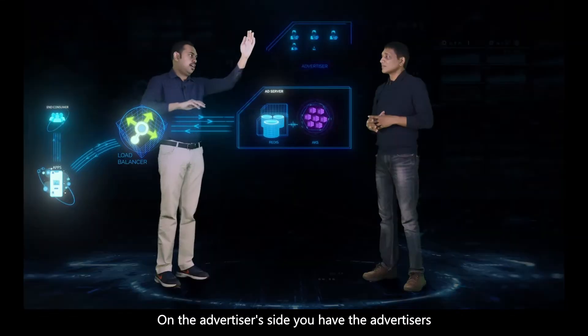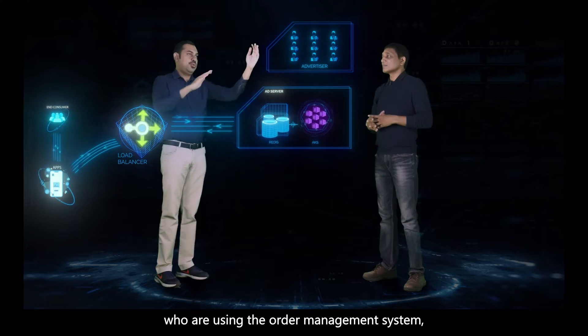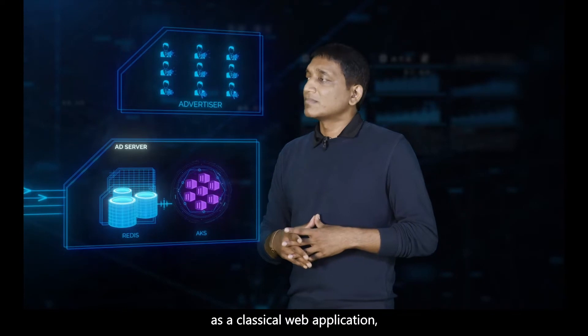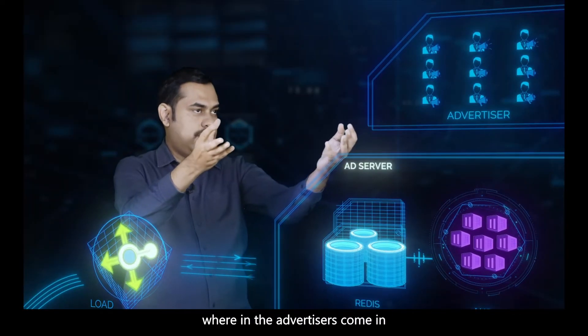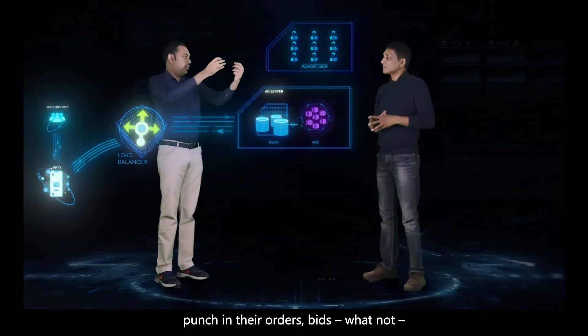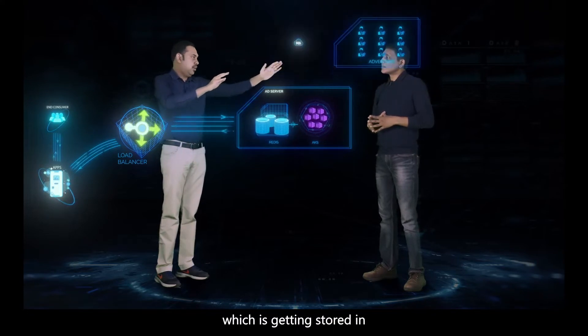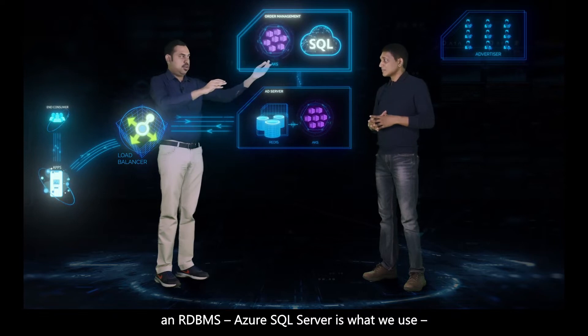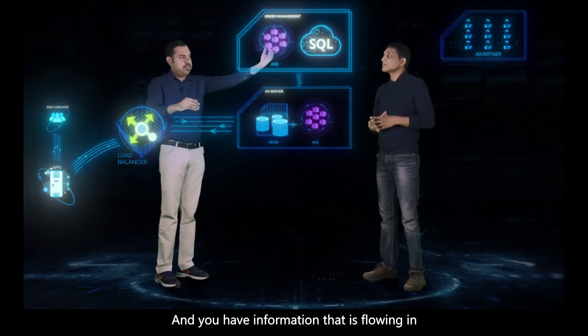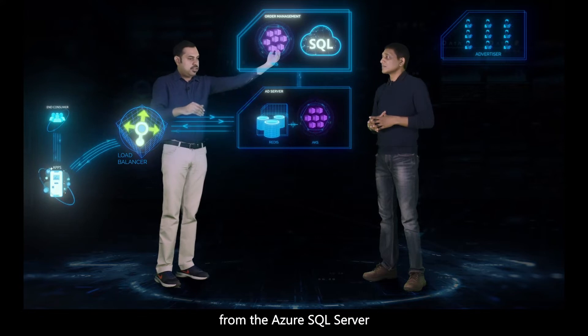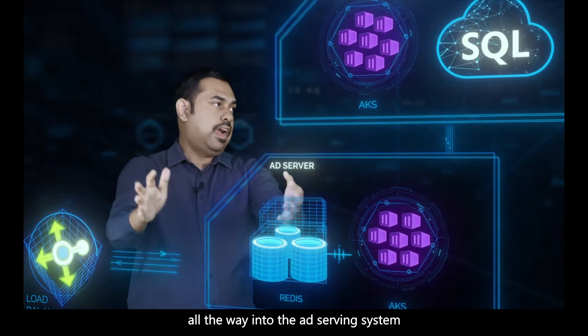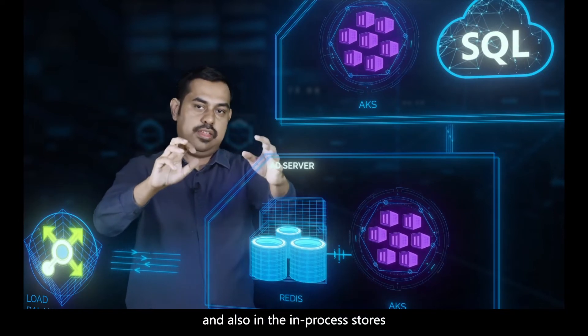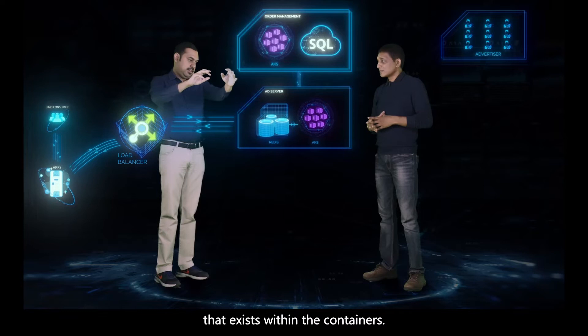On the advertiser side, you have advertisers using the order management system. You can think of that as a classical web application where advertisers come in, punch in their orders, bids, and so on, which gets stored in an RDBMS. Azure SQL Server is what we use—it's a great choice. You have information flowing from the Azure SQL Server all the way into the ad serving system, and it's getting cached at both the Redis layer and also in the in-process stores that exist within the containers.